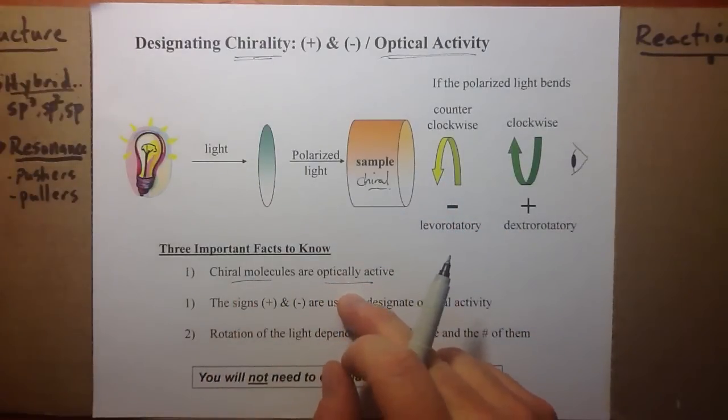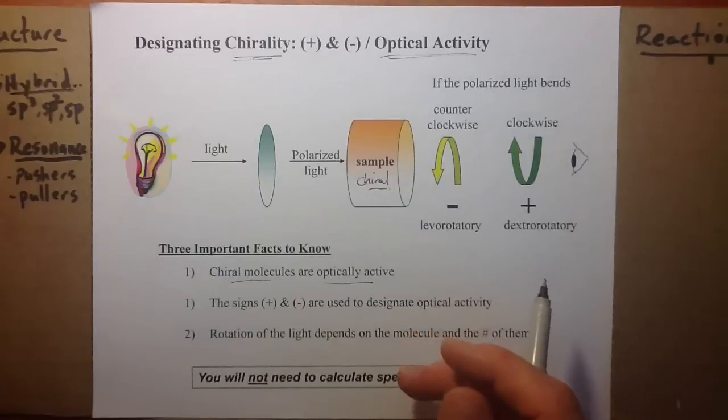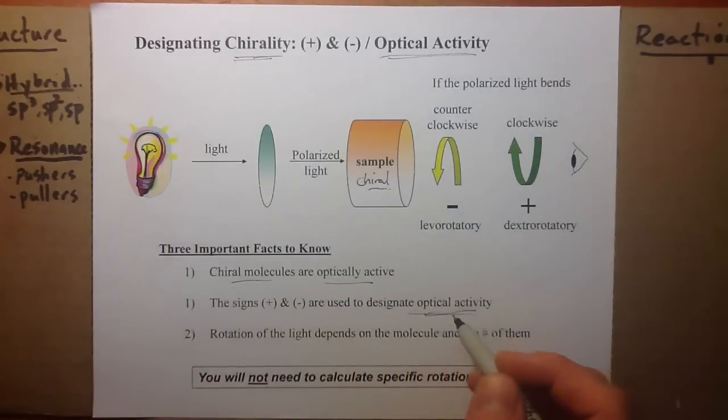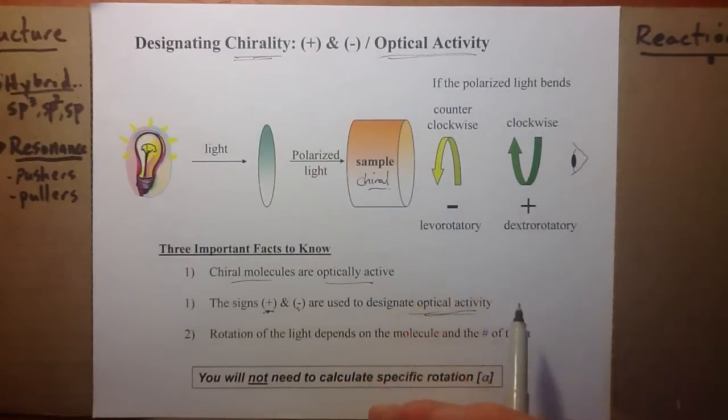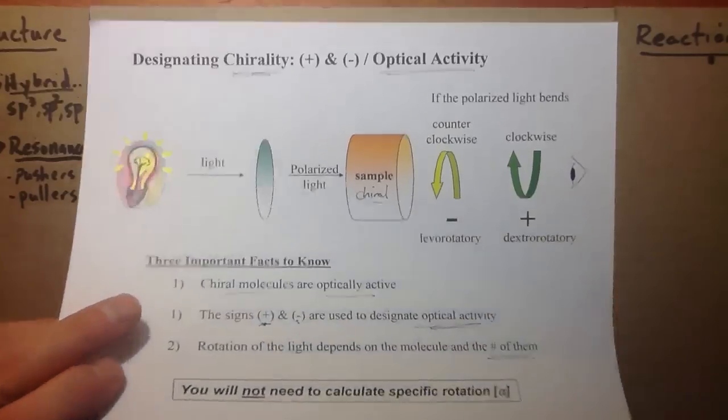If it bends the light in a counterclockwise rotation, it's levorotatory. If it's clockwise, it's dextrorotatory. There's no way you can take the sample and say you know it's going to be one or the other. You just have to analyze it, but you know the enantiomer would have the same rotation in the opposite direction and to the same degree.